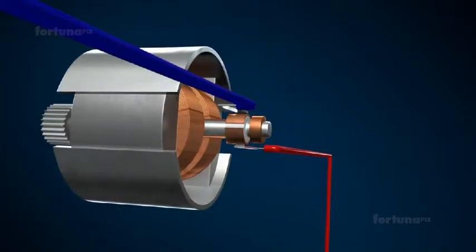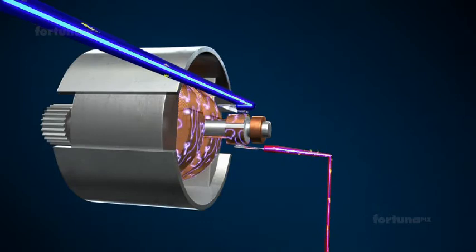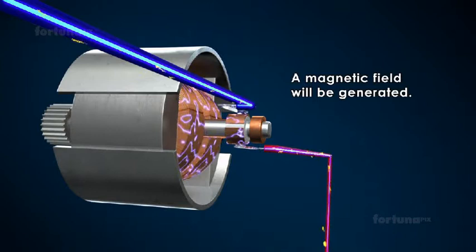Once a current passes into the armature through the brushes and commutators, a magnetic field will be generated.